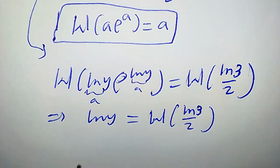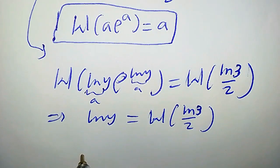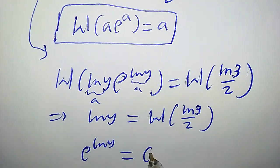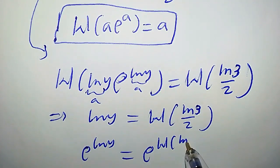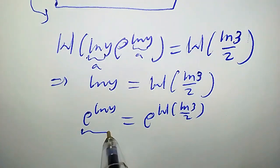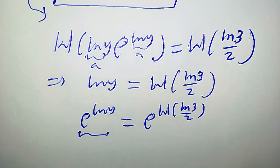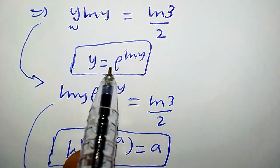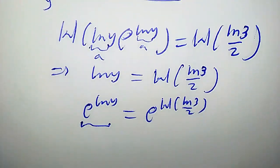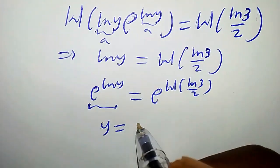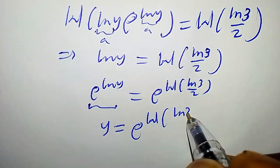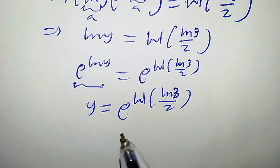Taking the exponential of both sides, we're going to have e^(ln y) equals e to the power of W(ln(3)/2). Now e^(ln y) is exactly y. So y equals e to the power of W(ln(3)/2).